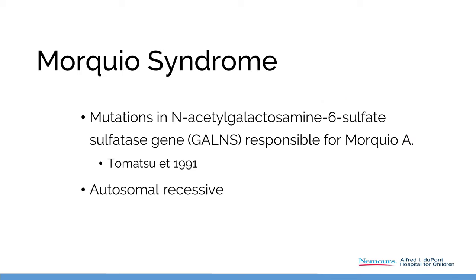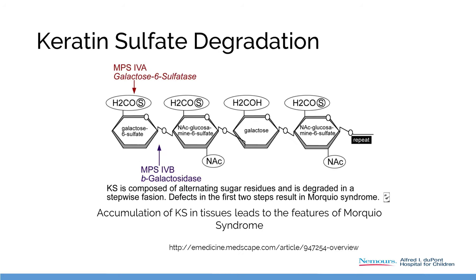Morquio syndrome is due to a mutation in N-acetyl-galactosamine-6-sulfate sulfatase. Keratan sulfate is processed continuously in our bodies, and if the enzyme to break it down is broken, you accumulate keratan sulfate in your bones and organs, leading to problems.